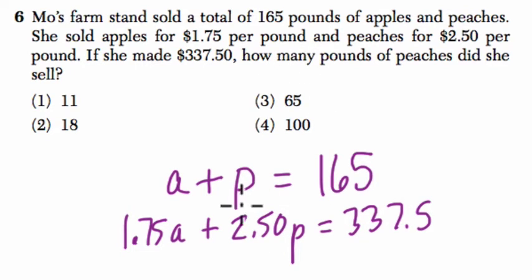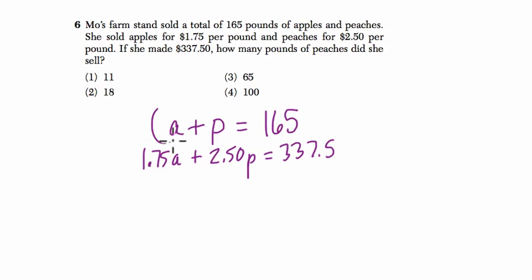So in order to solve for P, we've got to get rid of A. So I'm going to multiply everything in the first equation by negative 1.75. But once I do that, we'll be able to cancel out A, because we'll have opposite values in these terms. Let's see what that looks like.